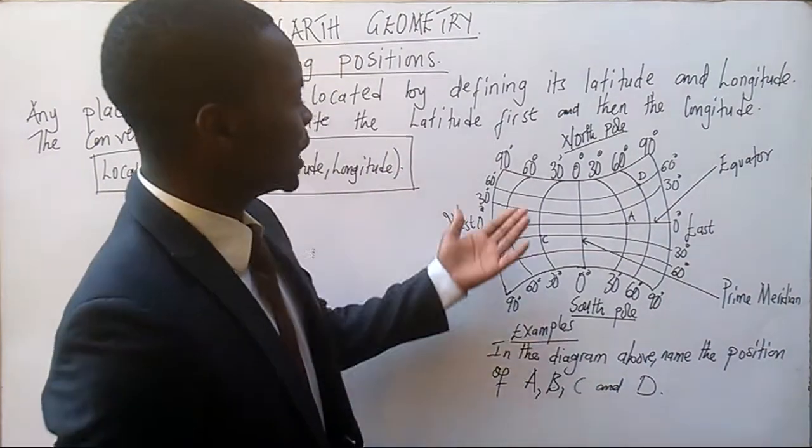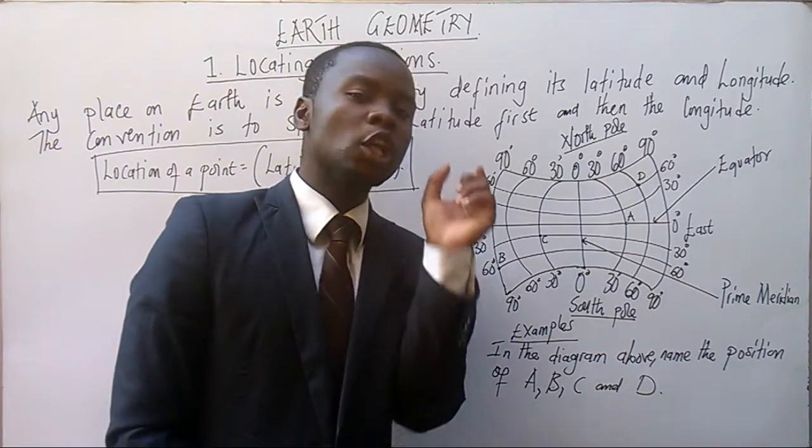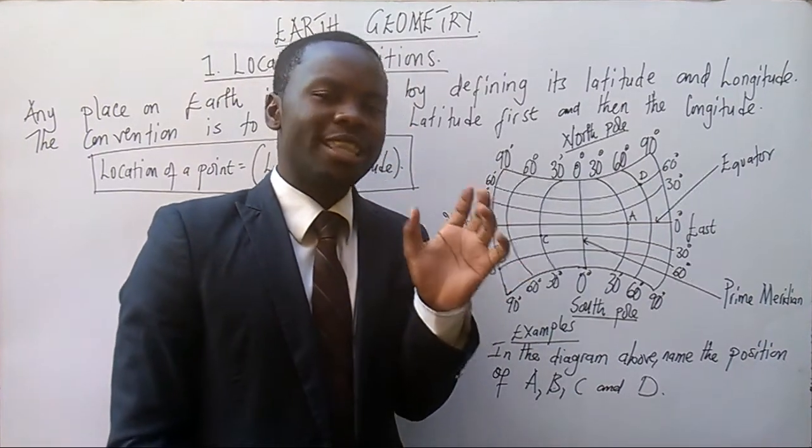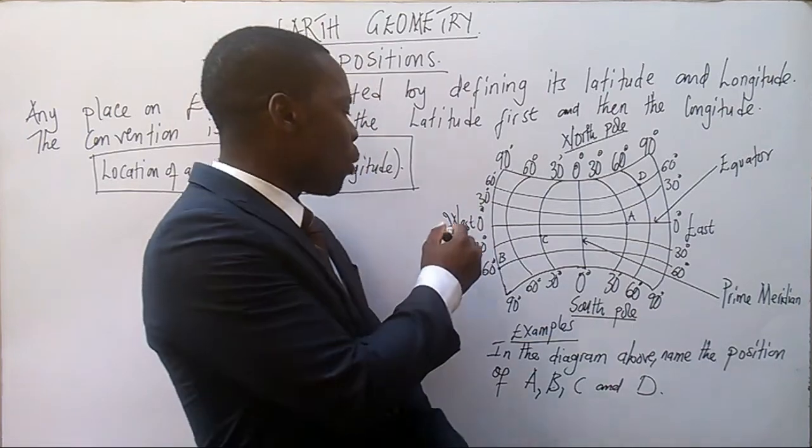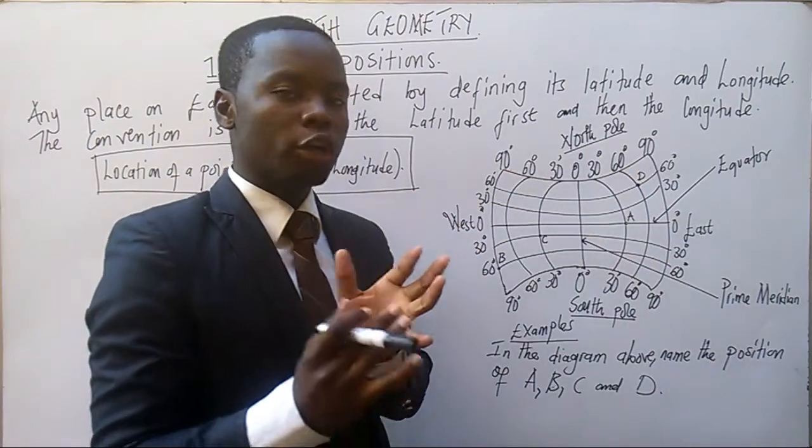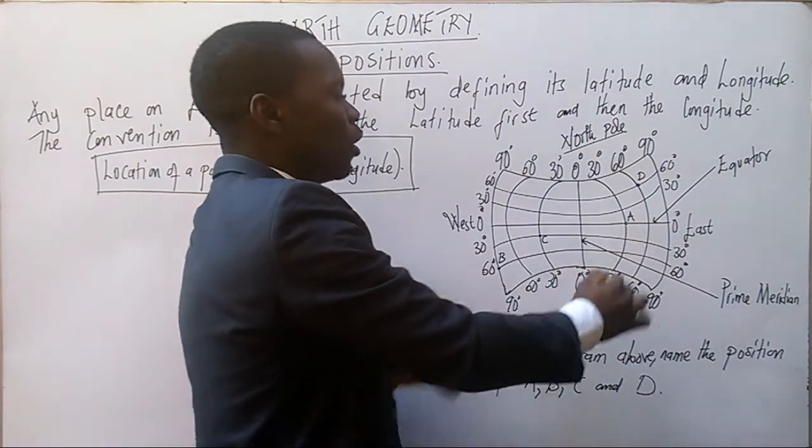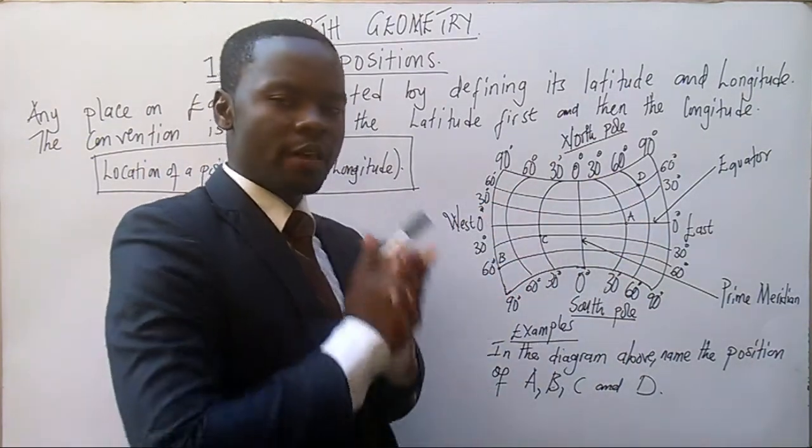Now we have got the latitude and the longitude. What's the difference between latitudes and longitudes? Latitudes, these are lines that move from west to east on the Earth's surface. While longitudes, these are lines that move from north to south on the Earth's surface. Very simple.